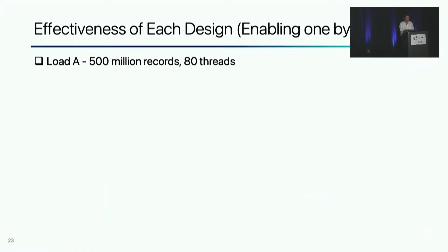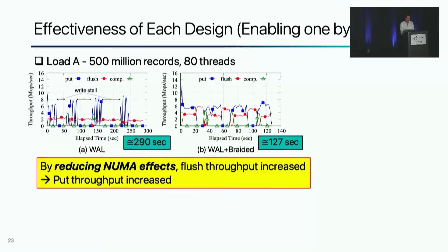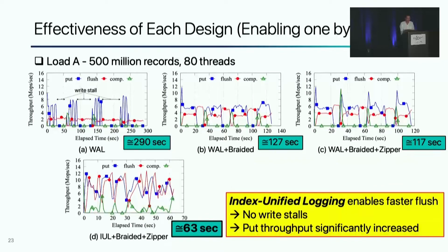Next, we evaluate the effectiveness of each of ListDB's three novel designs. As a baseline, we load 500 million records with standard WAL. If we enable NUMA-aware braided skiplist, flush and compaction become faster, so foreground write becomes faster. If we additionally enable zipper compaction, the compaction throughput is increased. Finally, if we enable all designs together, we can avoid write stalls and therefore foreground write throughput is significantly increased.